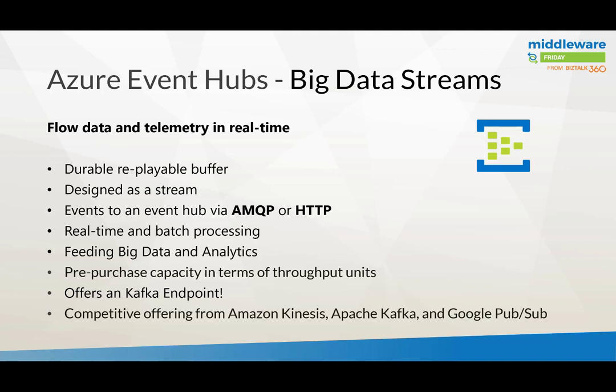Event Hubs use cases include behavioral tracking for mobile apps, web farm traffic, in-game event capture (like Xbox), and telemetry from industrial machines or IoT connected devices. Competing offerings include Amazon Kinesis, Apache Kafka, and Google PubSub. Google PubSub and Amazon Kinesis are managed event streaming services like Event Hubs, while Kafka is software you install on your own hardware. Now with Event Hubs, you have a Kafka endpoint enabled.